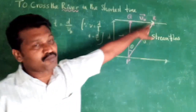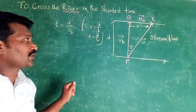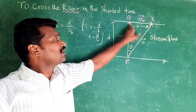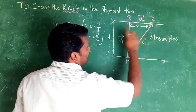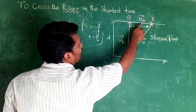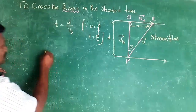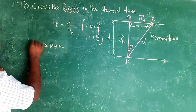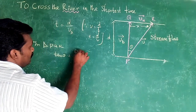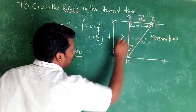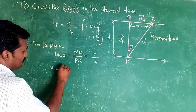At this time, the boat will reach point R, not Q. QR is the drift distance. This is the stream flow, and this is the resultant velocity. By right-angle triangle PQR, tan θ equals the opposite side over the adjacent side — QR over PQ. Since QR equals x and PQ equals D, tan θ equals x by D, so x equals D·tan θ.